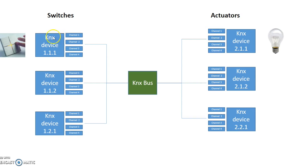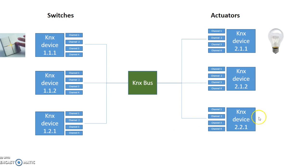Each device also has a series of sub-channels, the number of which will vary depending on the type of device. In this case, each of these six devices has just four channels. On the left side we've got some switches, with the communication bus linking them together, and then we've got the actuators on the right side.